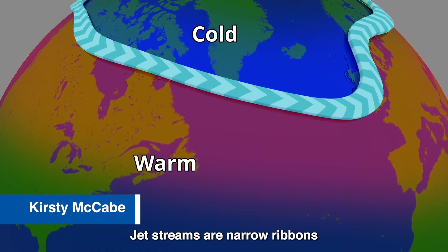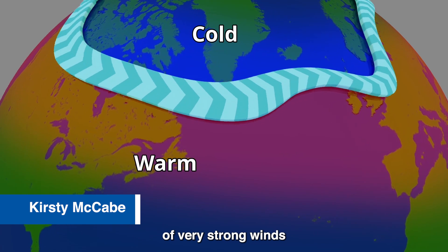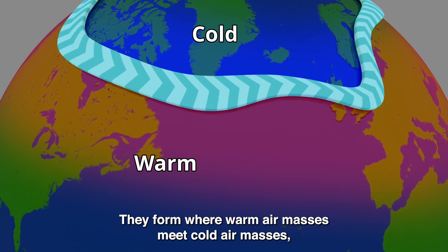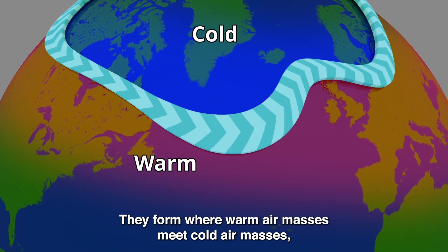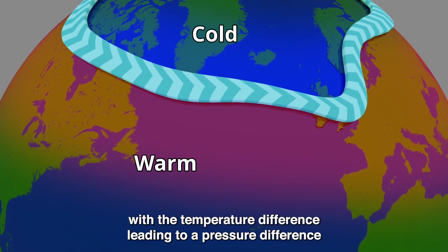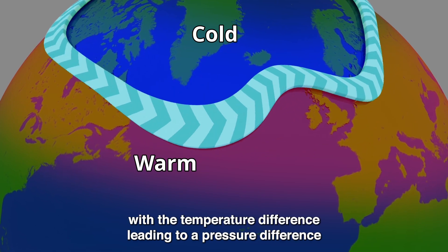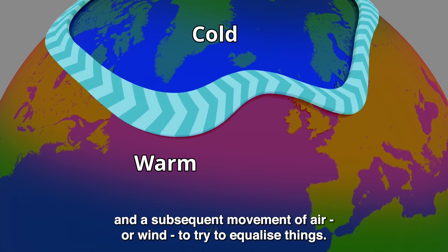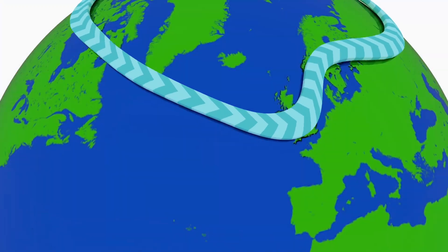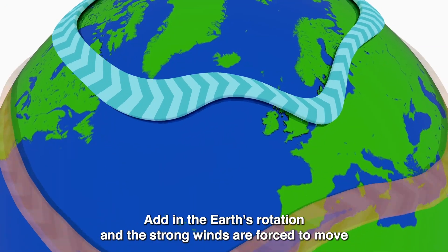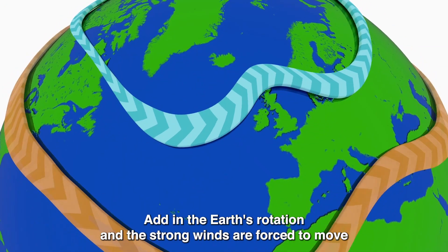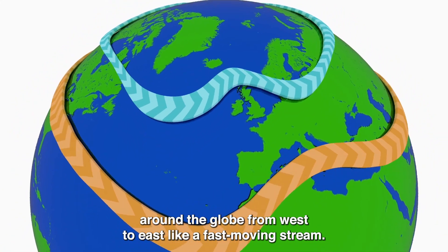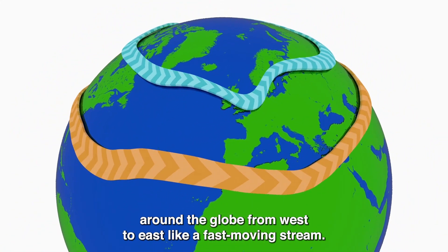Jet streams are narrow ribbons of very strong winds high up in our atmosphere. They form where warm air masses meet cold air masses, with the temperature difference leading to a pressure difference and a subsequent movement of air or wind to try to equalise things. Add in the Earth's rotation and the strong winds are forced to move around the globe from west to east like a fast moving stream.